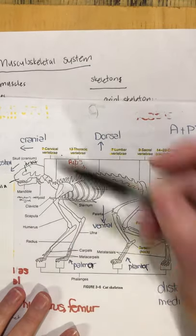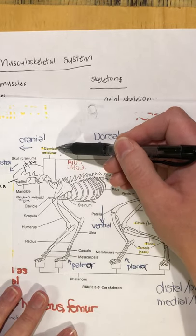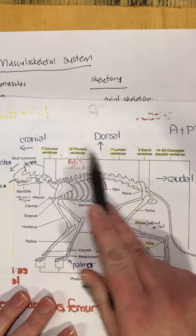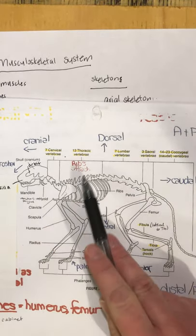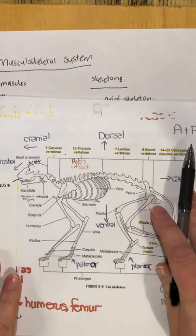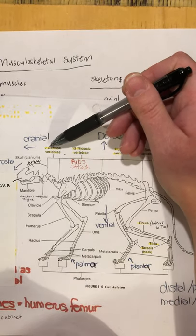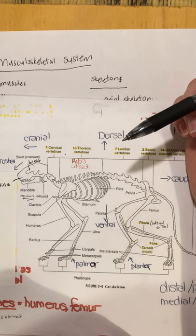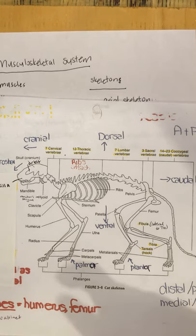Moving more caudal, we move into the spine. The bones of the neck are called the cervical vertebrae. All animals have a vertebral formula — you don't need to know those numbers. As a fun fact, all mammals have seven cervical vertebrae — so pugs with their short stubby necks and giraffes with their six-foot-tall necks still only have seven cervical vertebrae.